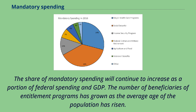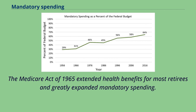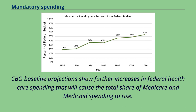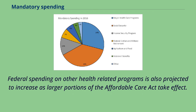The number of beneficiaries of entitlement programs has grown as the average age of the population has risen. The Medicare Act of 1965 extended health benefits for most retirees and greatly expanded mandatory spending. As life expectancy has increased, the portion of the population over 85 has also increased, creating a rise in Social Security and Medicare spending. CBO baseline projections show further increases in federal healthcare spending that will cause the total share of Medicare and Medicaid spending to rise. Federal spending on other health-related programs is also projected to increase as larger portions of the Affordable Care Act take effect.